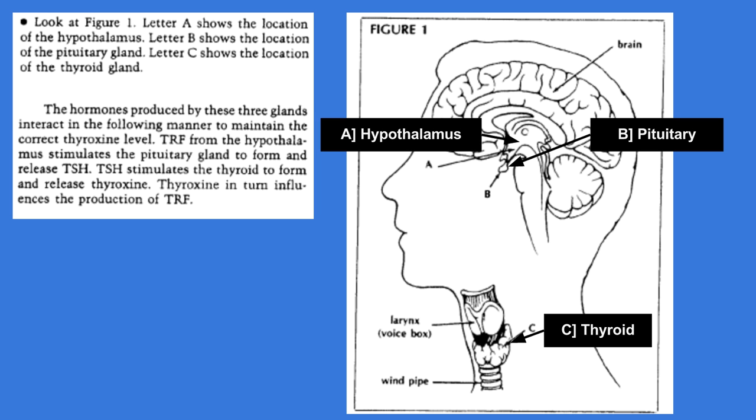The hormones produced by these three glands interact in the following manner to maintain correct thyroxine level. TRF, which is produced from the hypothalamus, stimulates, encourages the pituitary gland to form and release TSH. TSH stimulates or encourages the thyroid to form and release thyroxine. Thyroxine, in turn, influences the production of TRF, so it cycles back to the hypothalamus. And when there's enough thyroxine being produced, then it signals to stop this cascade, which shuts off the thyroid.